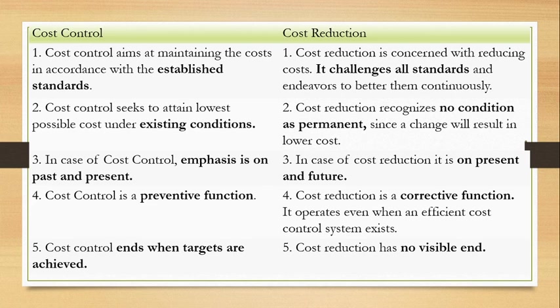The last difference: control ends when targets are achieved. If you had decided a target of 4 lakh and it has been achieved, then you have successfully done cost control. But cost reduction is an endless process — it has no visible end. It is always carried forward; you must always keep trying to reduce costs in some way or another.